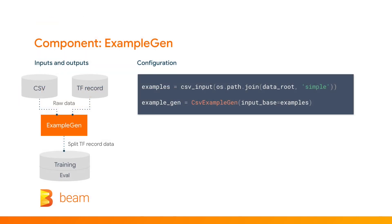First, we ingest our input data using ExampleGen. ExampleGen is one of the components that runs on Beam. It reads in data, splits it into training and eval, and formats it as TFExamples. This is what the configuration looks like for ExampleGen — very simple, just two lines of Python.